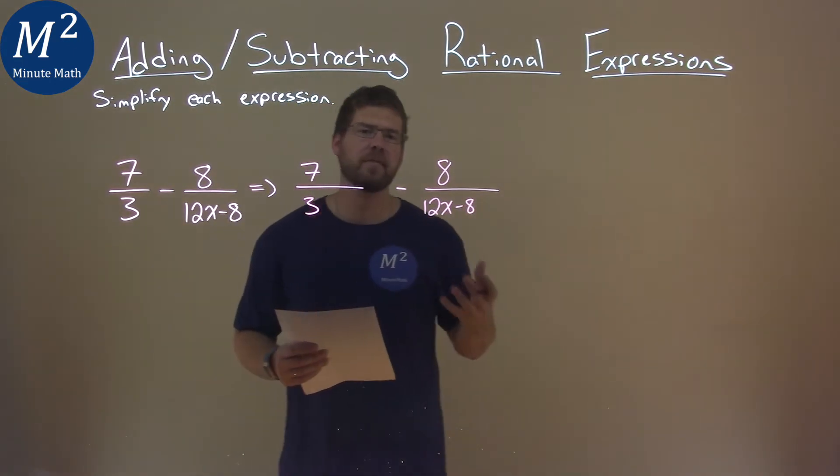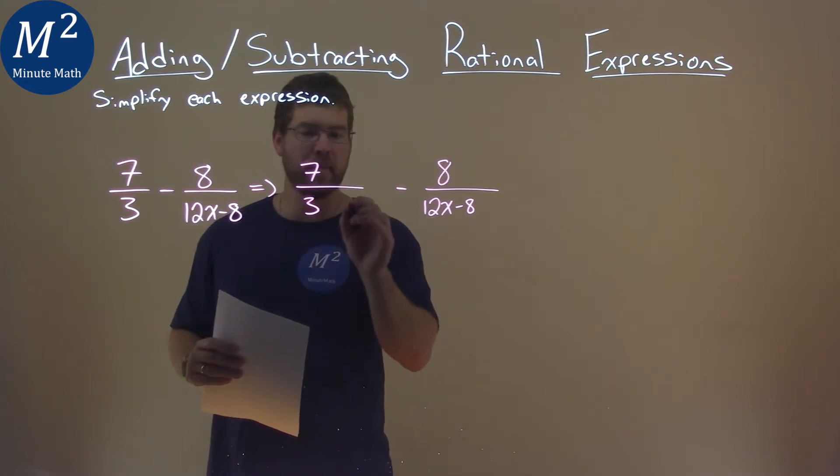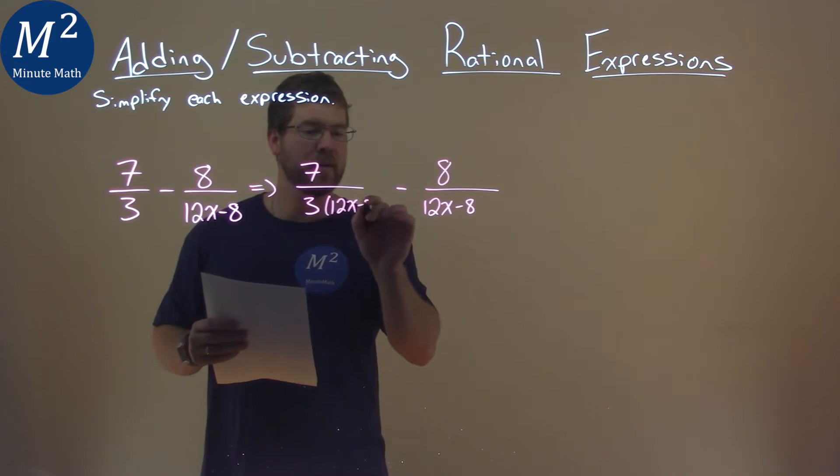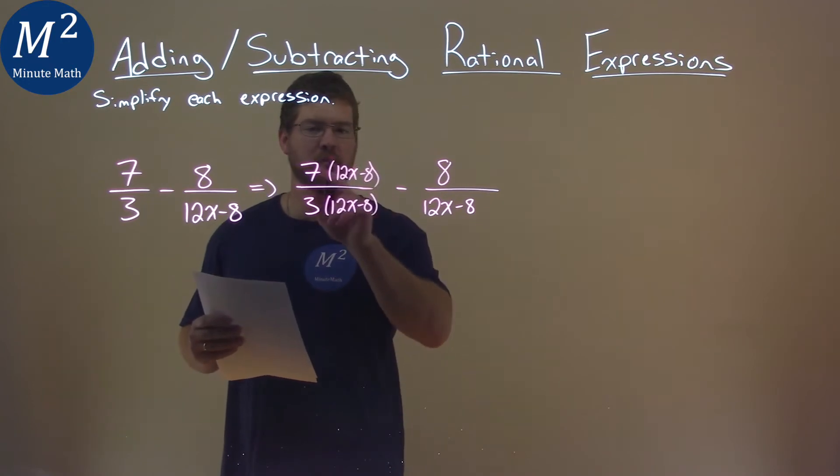But how do we get the same denominator? I'm going to take this first fraction, 7/3, and multiply it by (12x-8) over (12x-8). So I'm going to take this denominator and write it over itself, and we're going to multiply.